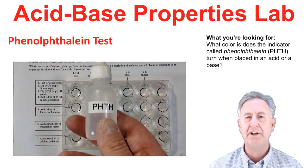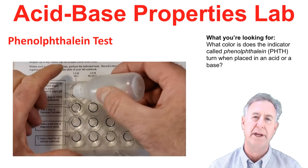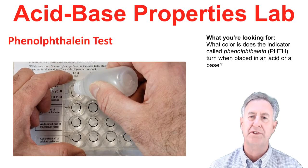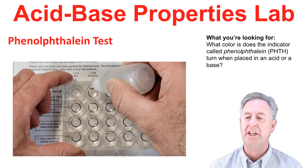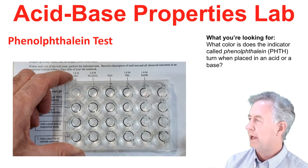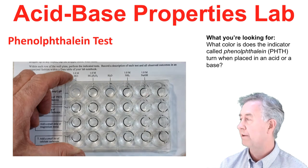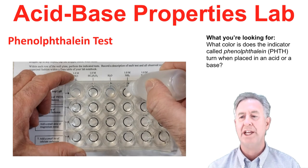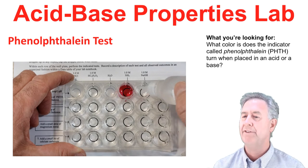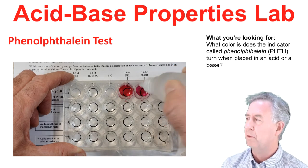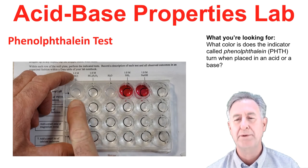Phenolphthalein is an indicator that turns a different color in the presence of an acid compared to a base, demonstrating whether the solution is acidic or basic. We put a couple of drops of phenolphthalein in each of our wells. The two acid wells are colorless, water is colorless, but in NH3, a weak base, it turns pink. And finally, NaOH, a strong base, turns pink again.